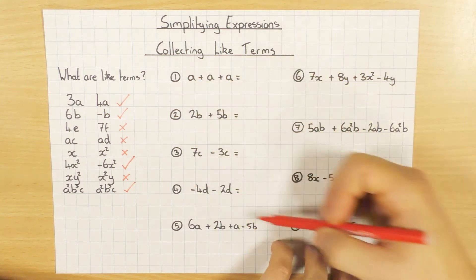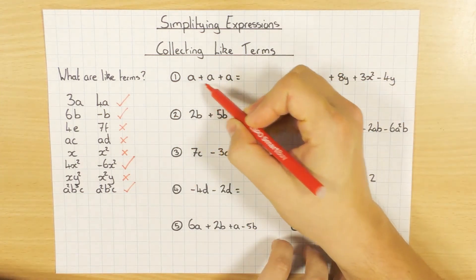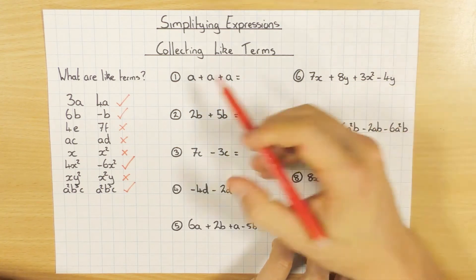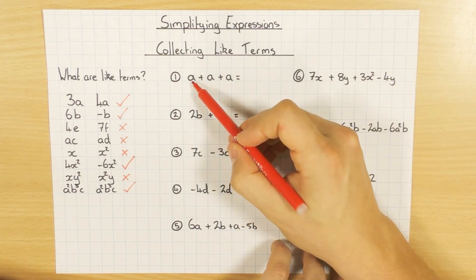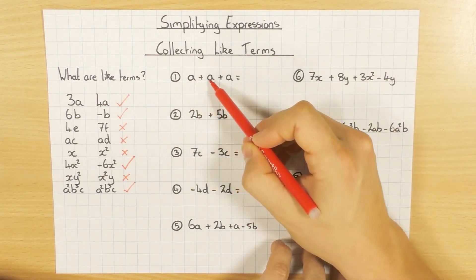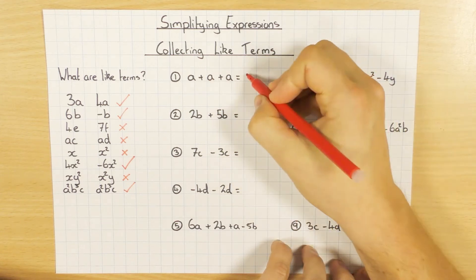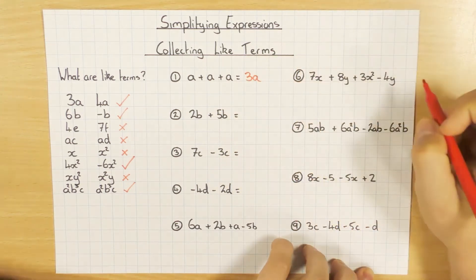So for example, if you now look at these examples I've got here, A plus A plus A, they are all the same. In which case, I can collect them. I can simplify them. I've got one there, another one there, another one there. So how many do I have? I have 3A.